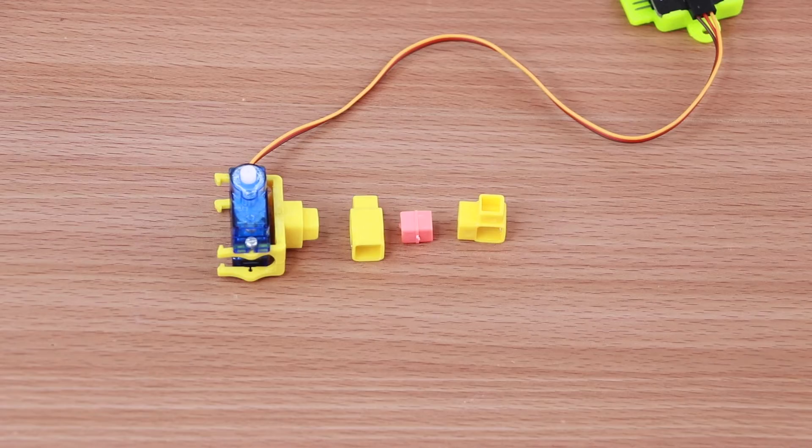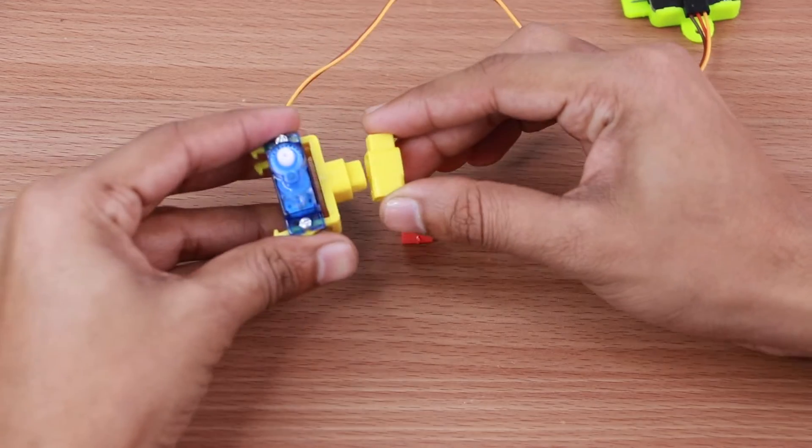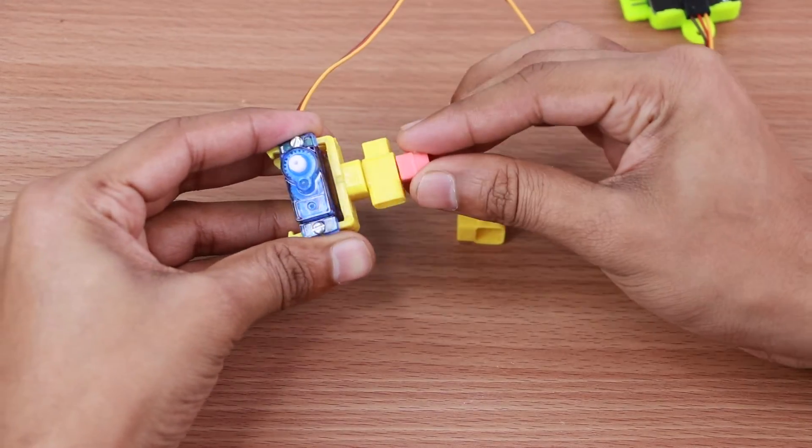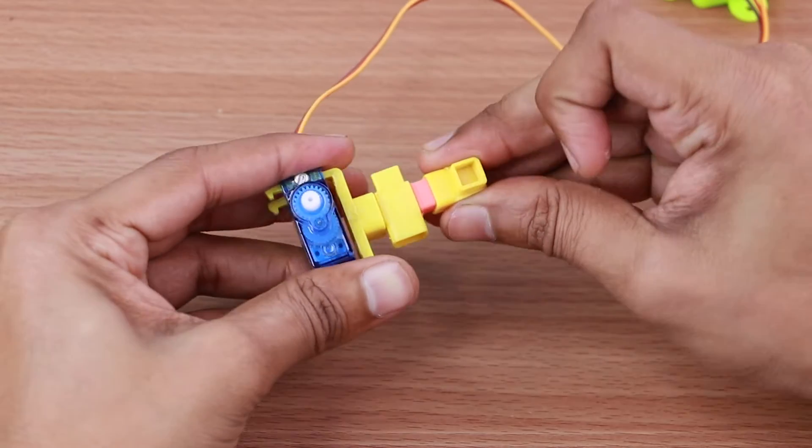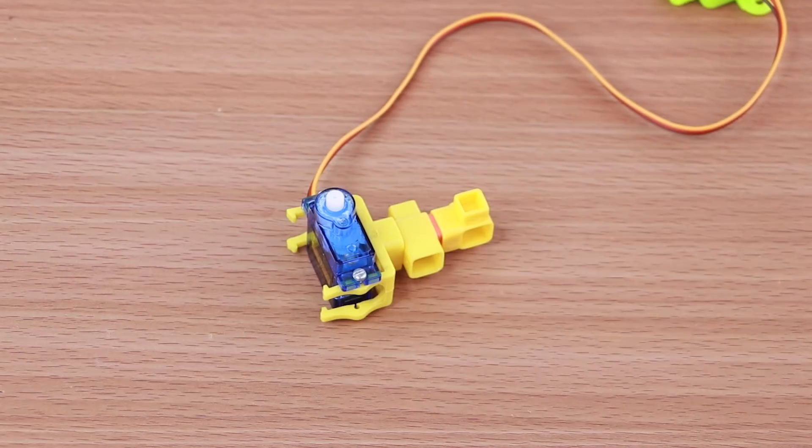Now let's make the automating mechanism. Take the servo motor, one battery holder, one one-hole beam, one male-to-male coupler and one one-hole elbow and join them as shown.